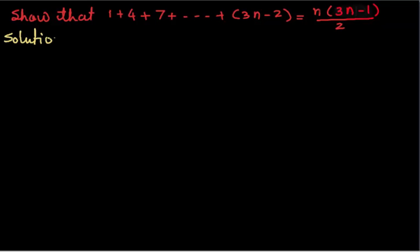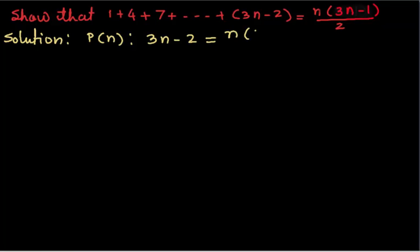Solution. Let us consider P(n) as the statement that the sum 1 + 4 + 7 + ... + (3n - 2) equals n(3n - 1) over 2.